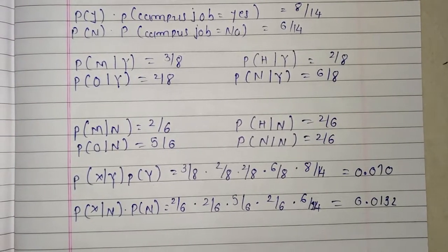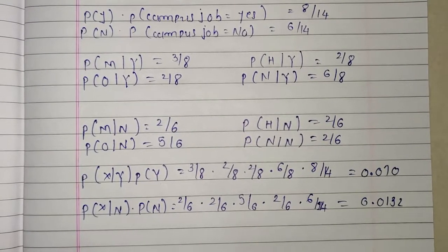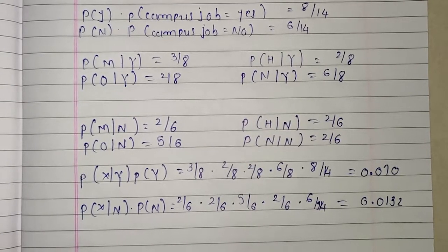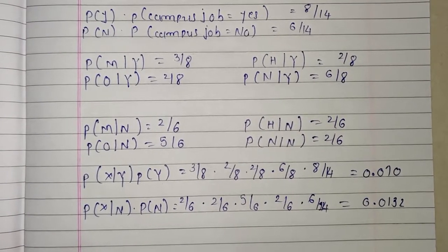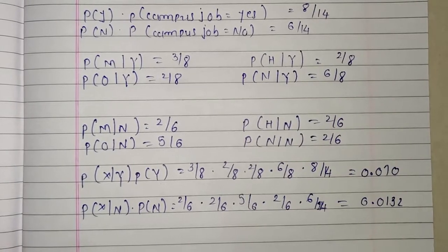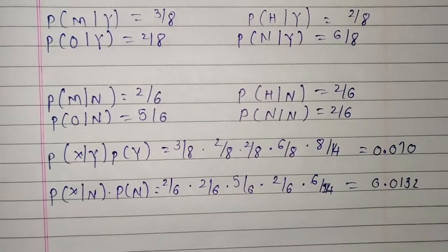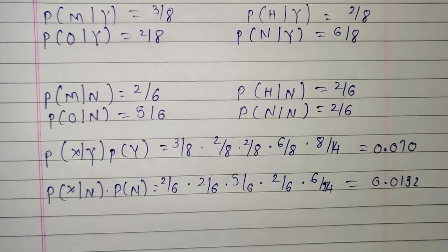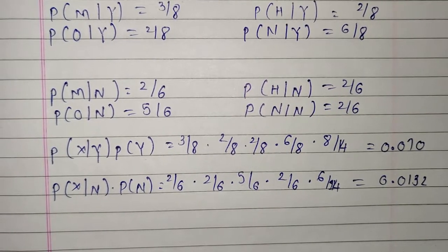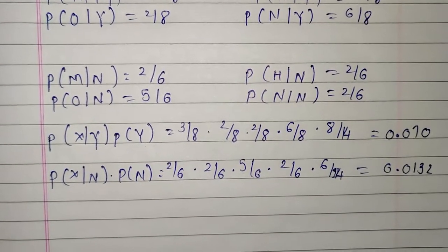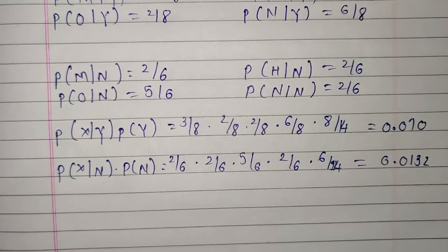For class level no, we also have 4 attributes: college grade, school grade, gender, and sports interest. College grade medium: P(M|N) equals 2 by 6. School grade high: P(H|N) equals 2 by 6. Female: probability P(F|N) is 5 by 6. Sports interest no: P(N|N) is 2 by 6. Here, the first N denotes sports interest no, and the second N denotes class level no.